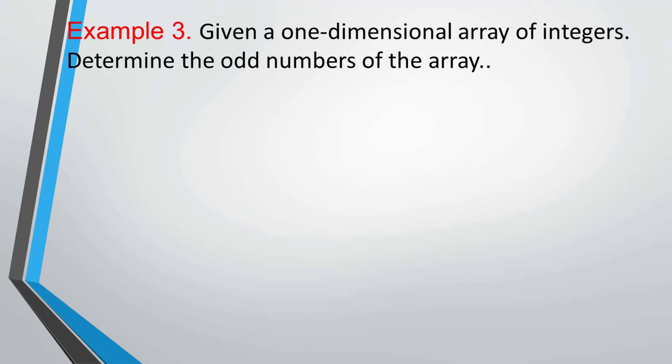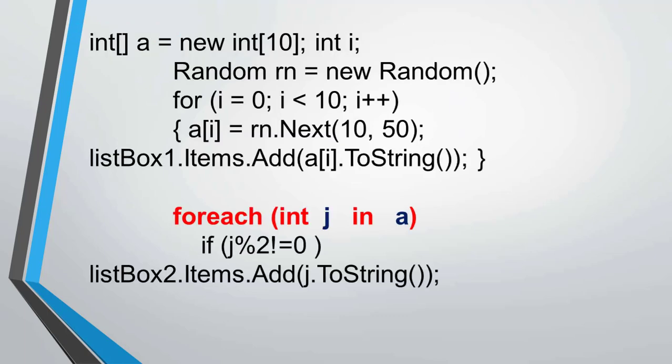Example 3: given a one-dimensional array of integers, determine the odd numbers of the array. To determine the elements of the array we use a random number generator. First step: declaring the array. Next step: we determine the elements of the array using a random generator, as you can see on the screen. We use the foreach statement to iterate. Then we check the condition — if the condition is true, for output we use the ListBox component.